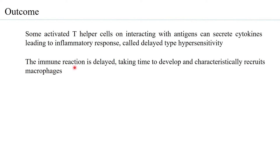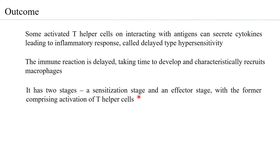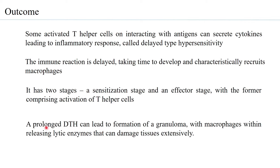The immune reaction is delayed, taking time to develop, and characteristically recruits macrophages — unlike type 3 hypersensitivity, which recruits neutrophils. It has two stages: a sensitization stage and an effector stage involving activation of T helper cells. If the T helper cells are sensitized, this gives rise to a heightened immune response. A prolonged delayed type hypersensitivity can lead to granuloma formation, with macrophages releasing lytic enzymes that can damage tissues extensively — an excessive form of delayed type hypersensitivity.